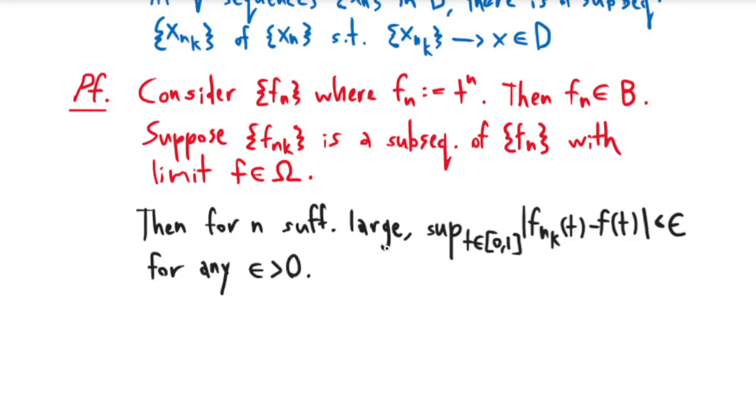But note that this basically just means that f_{n_k} converges uniformly to f. This is the same as saying that uniformly on the interval from 0 to 1, the distance between these two is less than ε.